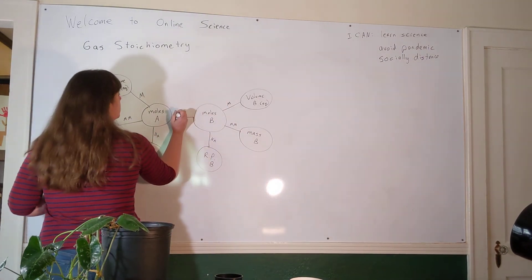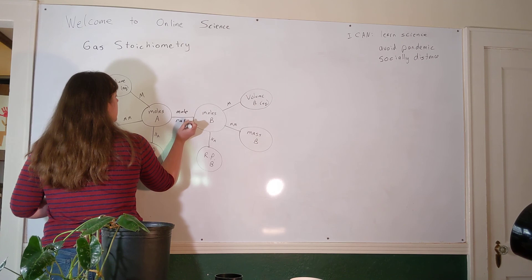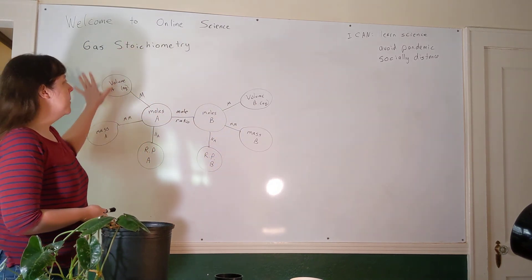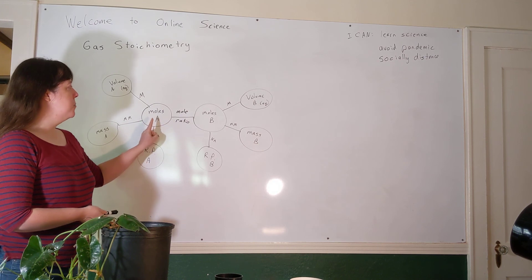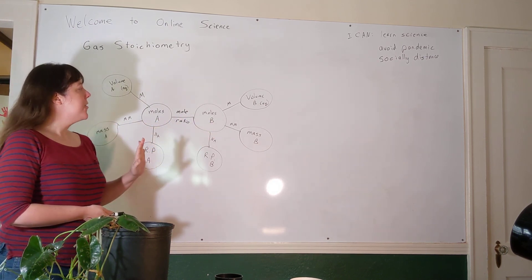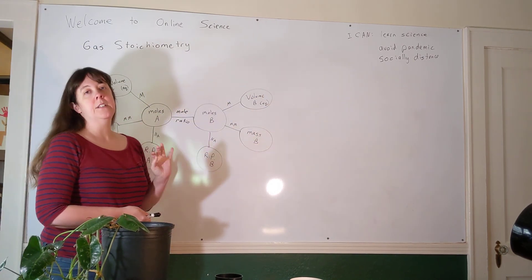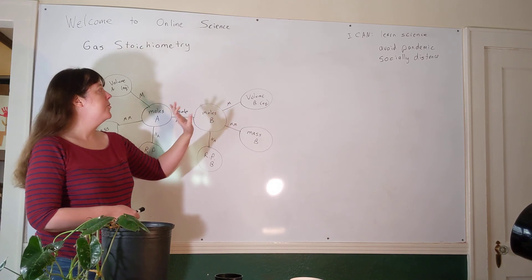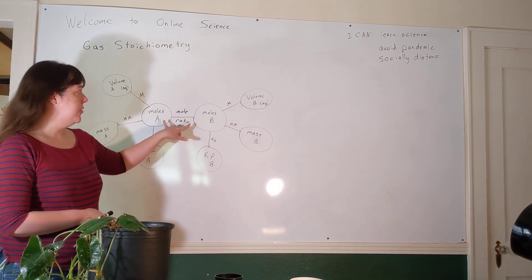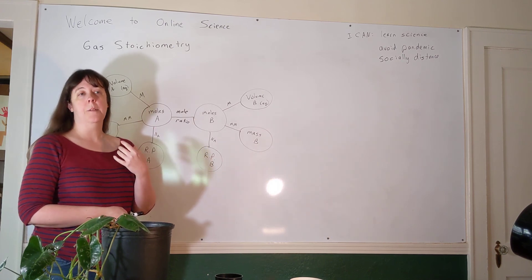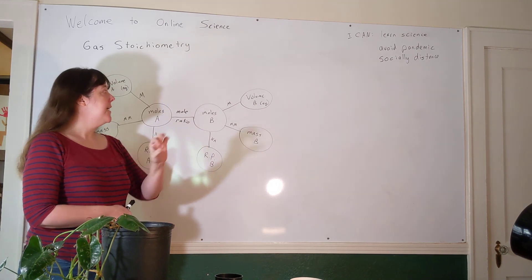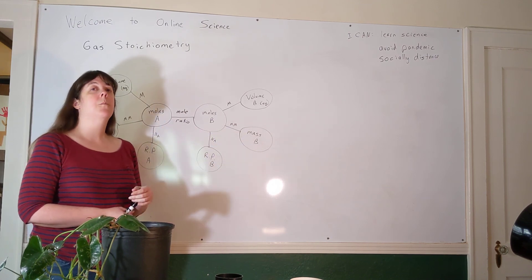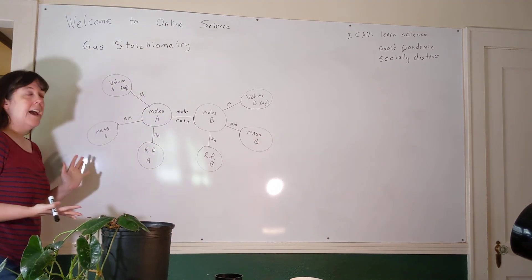Stoichiometry problems always have three steps. The first step is to change whatever amount you're given into moles. The second step is to change moles of what you're given into moles of what you're asked for. And the third step is to change moles of what you're asked for into whatever substance it is that you're asked for. If the problem gives you moles, you can skip the first step. If the problem asks you for moles, you can skip the third step. But this central step, this mole ratio step, has to be in every stoichiometry problem because the key is that you're given an amount of one substance and asked for an amount of another substance.